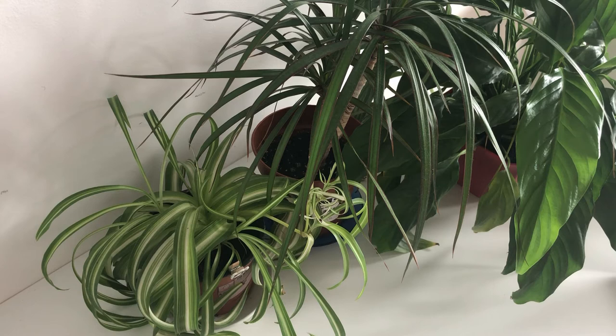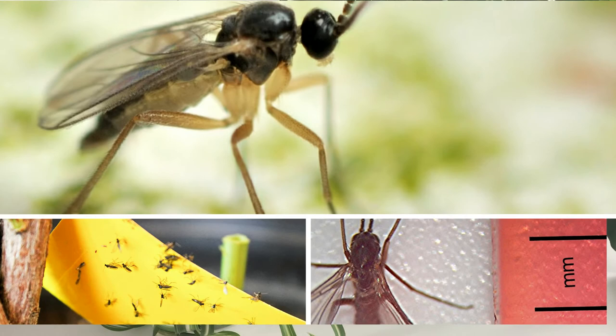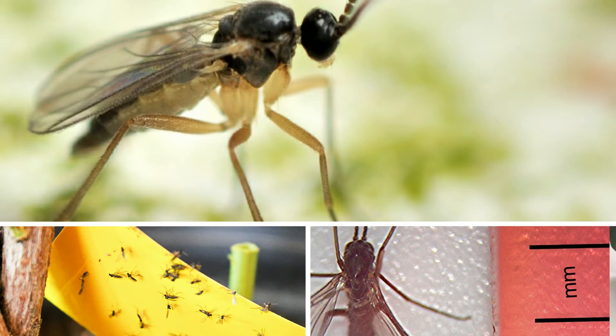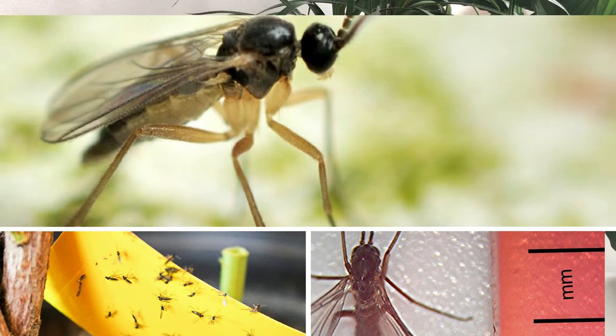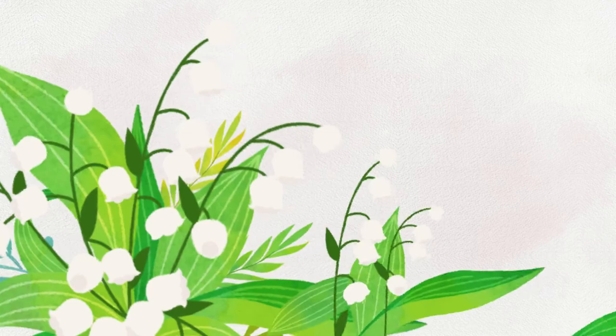Fungus gnats usually go unnoticed until they reach the adult stage. As adults, they have wings and fly about looking like tiny black gnats. Before they mature, the larvae live in the upper surface of the plant's potting soil. In good light, the larvae can be seen as minute worm-like things with dark heads swimming on the surface of the soil following the application of water. These gnats can emerge from the soil of any plants, particularly those that are high in organic matter and kept constantly moist.